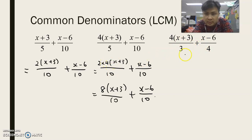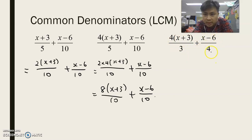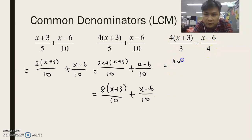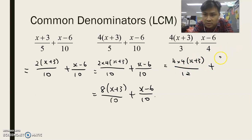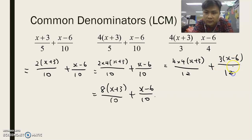Lastly, let's take a look at this example. What will be the lowest common multiple of 3 and 4? It will be 12. In order to get 12 for the first term, we will need to multiply by 4. And in order to get 12 for the second term, we will need to multiply by 3. So it will be 4 times (x + 3) over 12, and 3 times (x − 6) over 12.